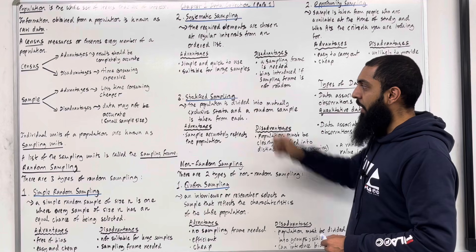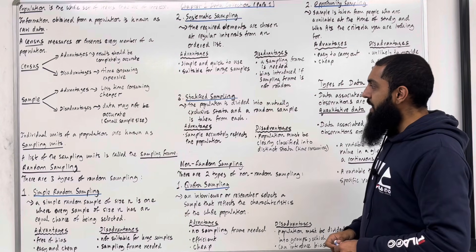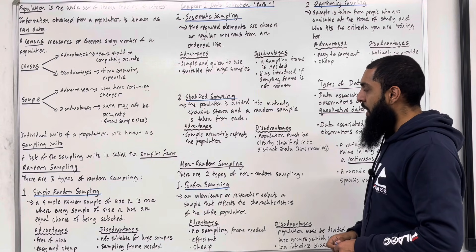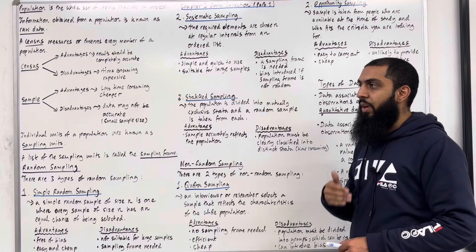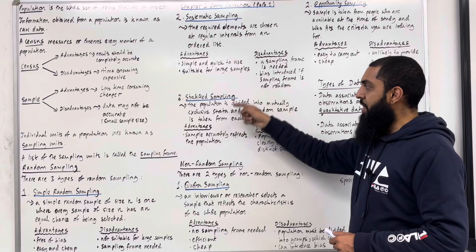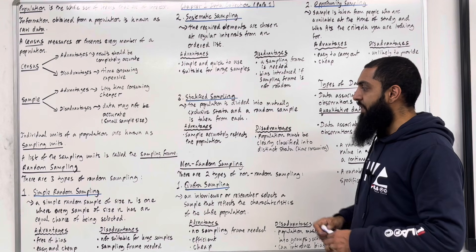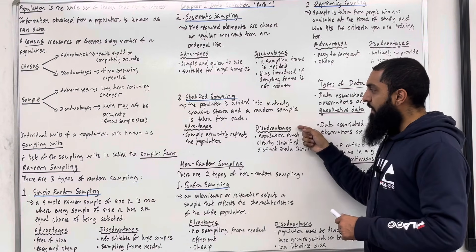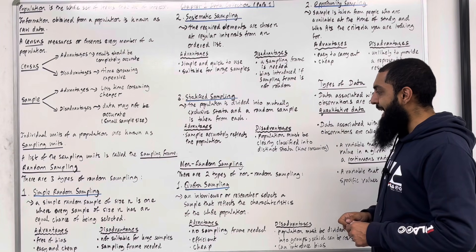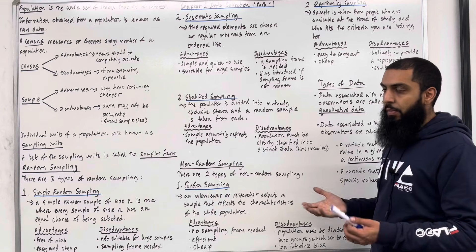Moving on to the third and final random sampling technique, called stratified sampling. The population is divided into mutually exclusive strata and a random sample is taken from each. Strata are groups — we could have groups by age, groups by gender, and so on. The advantage is that the sample accurately reflects the population. The disadvantage is that the population must be clearly classified into distinct strata, which might be time consuming.